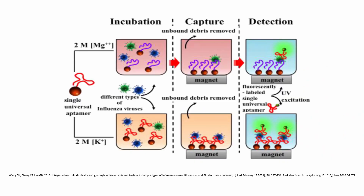Another example of how aptamers can be applied to medicine is in the detection of the influenza virus. Because aptamers can be designed with extremely high specificity to different molecules, aptamers can be used to differentiate between the different strains of influenza, leading to a more accurate diagnosis for patients. In addition, aptamers can also be fluorescently tagged, making diagnosis much easier.